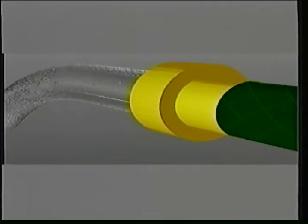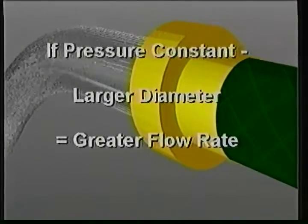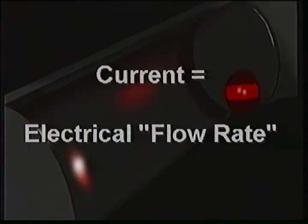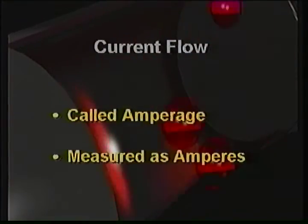If the pressure remains the same, a hose that has a larger diameter will have more water flowing through it. Fire hoses have large diameters to put water rapidly into a burning building. We use the term current flow for electricity, like we use flow rate for water. To do more work in a shorter period of time with electricity, we use a higher current flow. The current flow required to operate an electrical device, such as an arc welder, is called its amperage, and is measured in amperes, or amps for short.